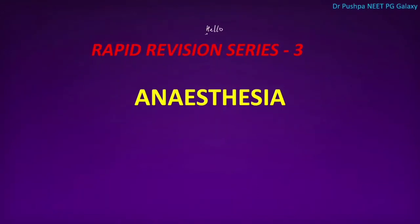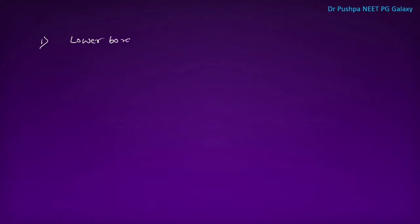Hello friends, today we will discuss a few important points from anesthesia for upcoming exams. First point: the spinal cord ends at the lower border of L1 or upper border of L2 in adults. In children, the spinal cord ends at the lower border of L2.